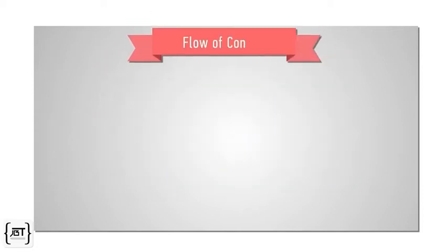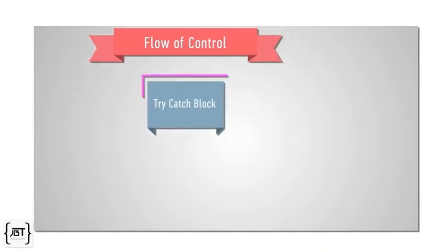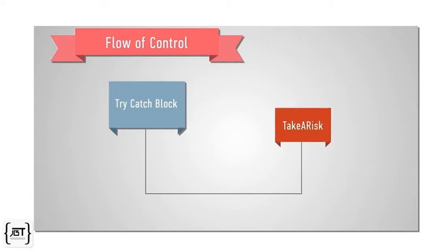To understand the flow of control in a try catch block, let's look at an example. We are defining a method flow that calls the method take a risk inside a try catch block. The take a risk method may or may not throw an exception.